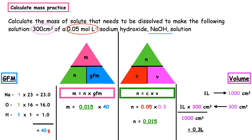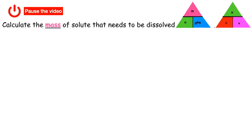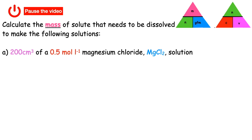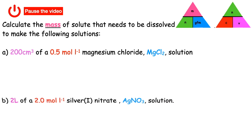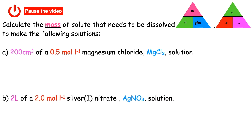We substitute that into our final equation: mass equals 0.015 times 40, which equals 0.6 grams. Here are two more examples for you to have a go at — pause the video and when you're ready the answers will pop up on the screen.